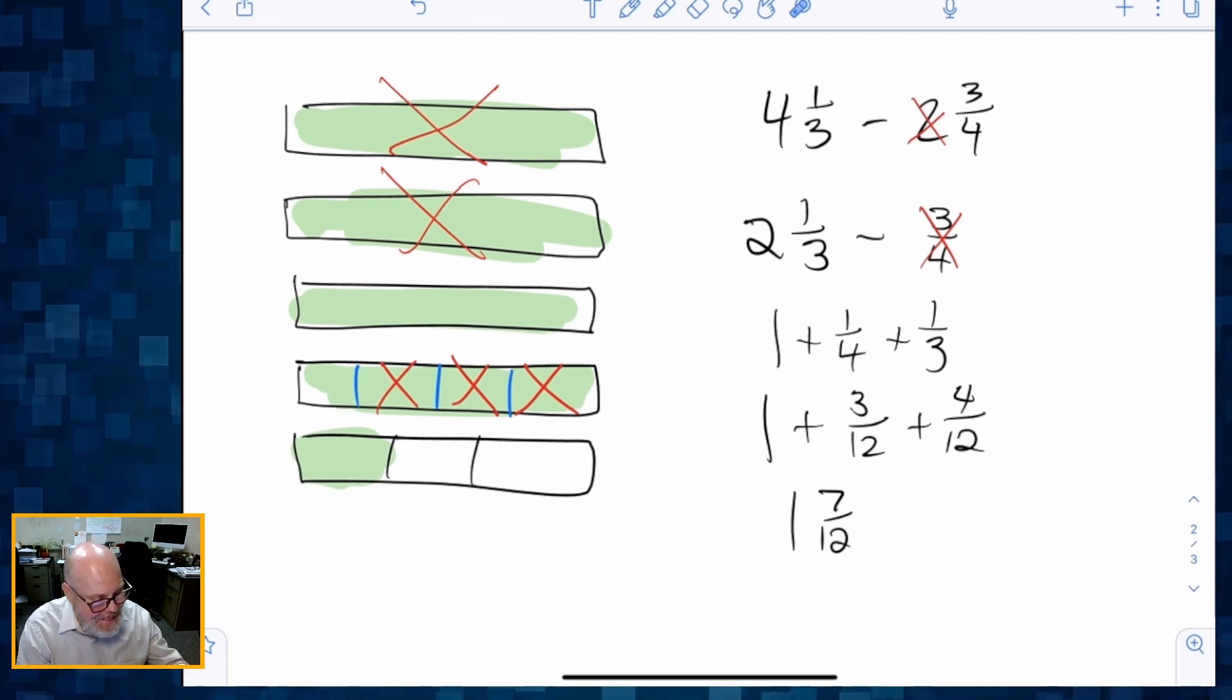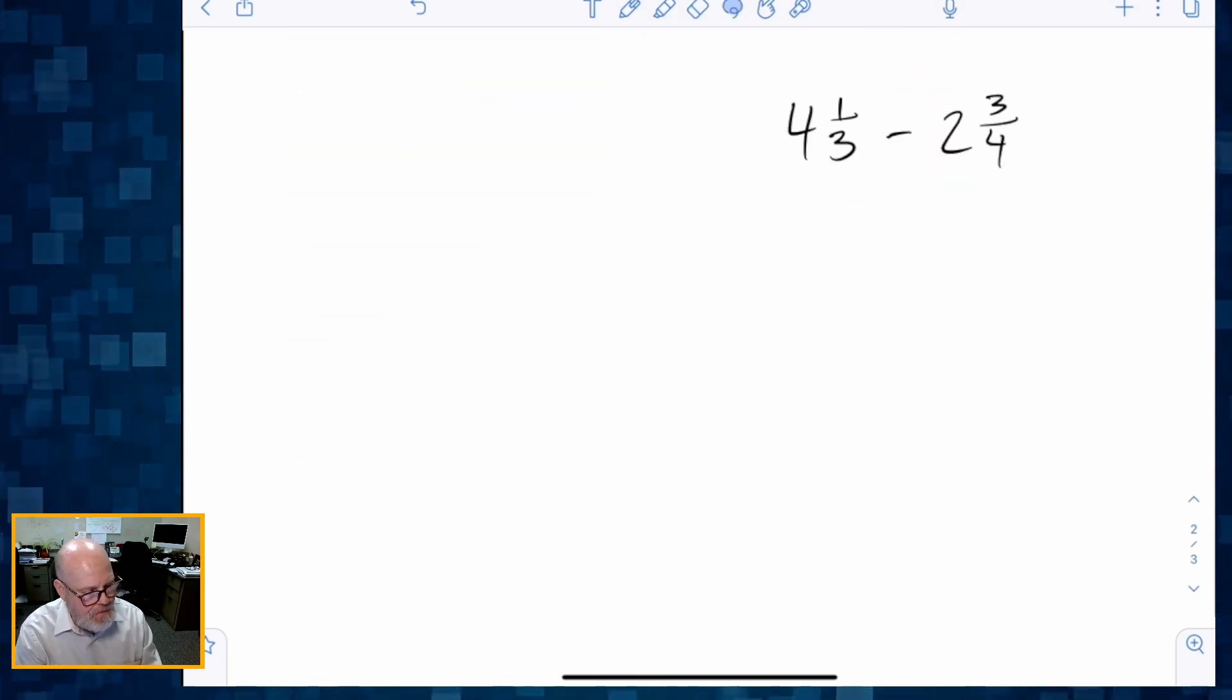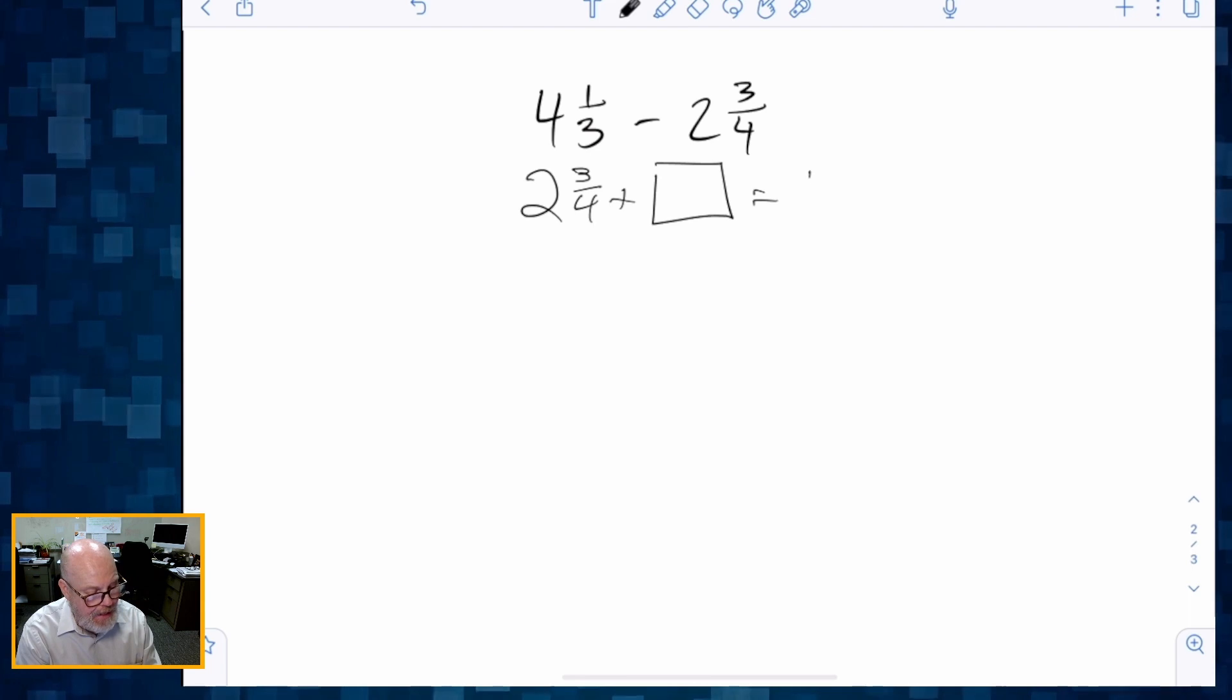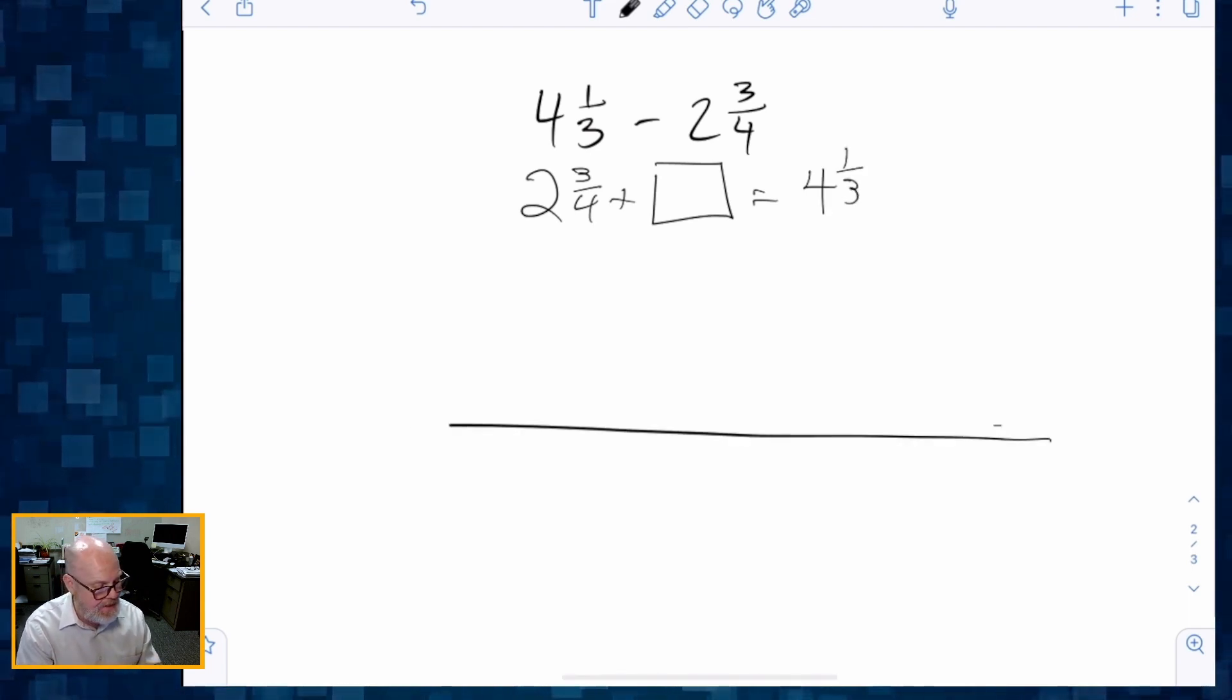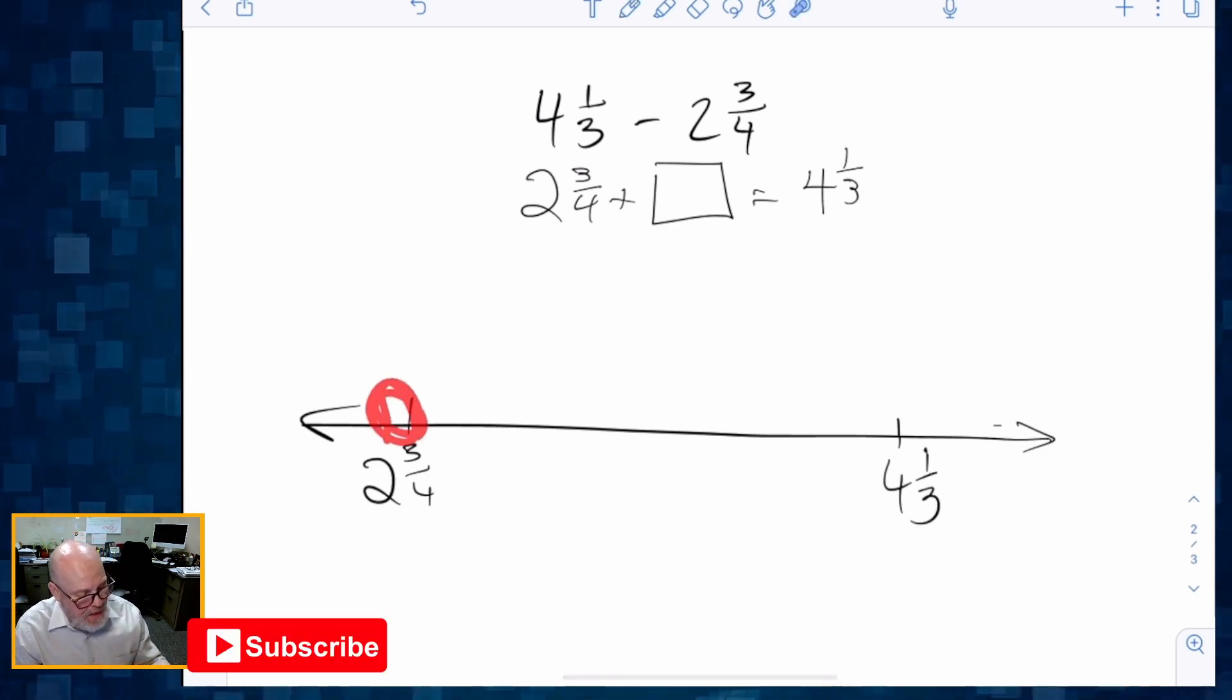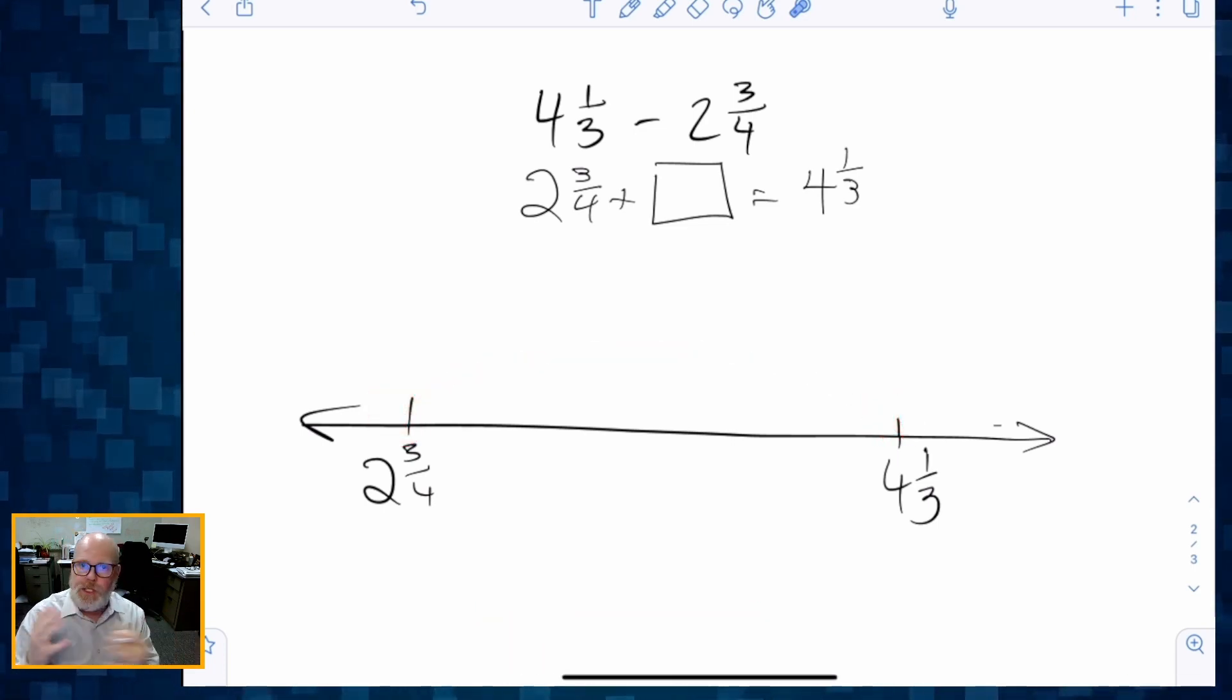Okay. Now we could represent that same problem on a number line. So let me show you what that's going to look like. We want to think about subtraction as kind of like an addition problem: 2¾ plus what is going to get us to 4⅓. So it's really saying, what is the distance from 2¾ up to 4⅓? That's what we want to do. We want to find the distance from here up to here and we don't have to do it in one fell swoop. We could do it in chunks.